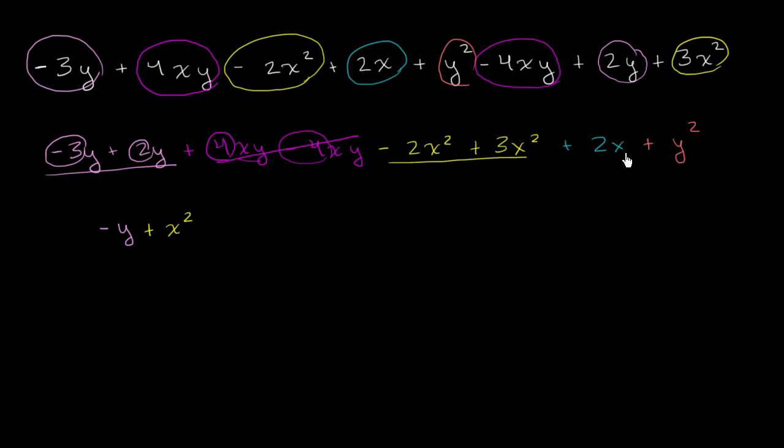And then there's nothing really left to simplify. So plus 2x plus y squared. And we're done. Obviously you might have gotten an answer in some other order, but the order in which I write these terms doesn't matter. It just matters that you were able to simplify it to these four terms.